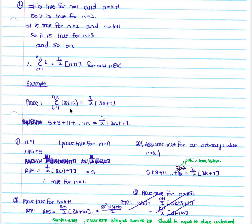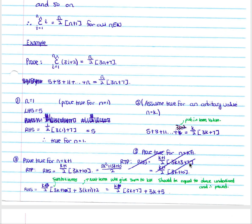We move on to a second example, similar to the one above, except we're now dealing with the sum of (3i plus 2). We follow the same steps. Prove it true for n equals 1: substituting 1 into the left hand side gives 5, and substituting 1 into the right hand side also gives 5, therefore it's true for n equals 1. In our second step we assume it's true for an arbitrary value n equals k, substituting k in: 5 plus 8 plus 11 ... to 3k plus 2 equals the right hand side with k substituted in.